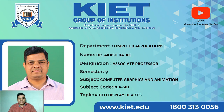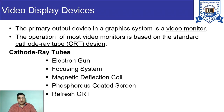Hello students. In today's lecture I will discuss video display devices. The most common video display device is the CRT screen — cathode ray tube. The primary output device in a graphics system is a video monitor, and the operation of most video monitors is based on the standard cathode ray tube design.